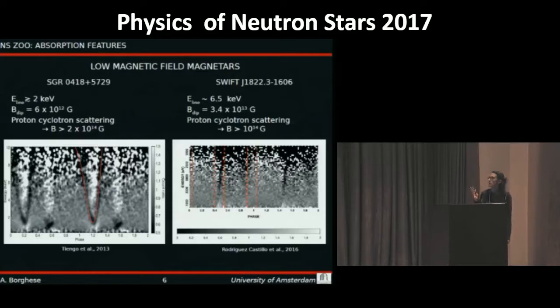If we interpret this line as proton cyclotron line, the inferred magnetic field is above 10^14 Gauss. These findings have motivated our search for phase-dependent absorption features in the X-ray spectra of X-DINs, because according to magneto-thermal evolution models, X-DINs are thought to be aged magnetars.